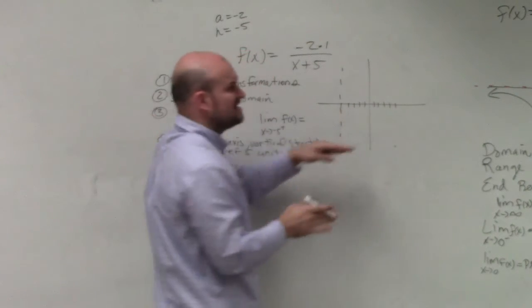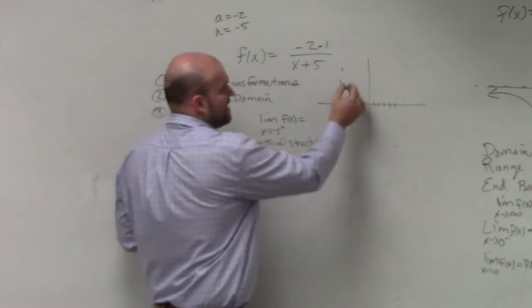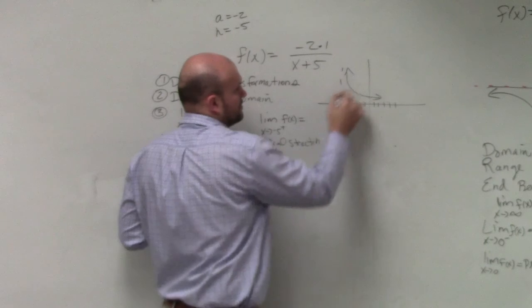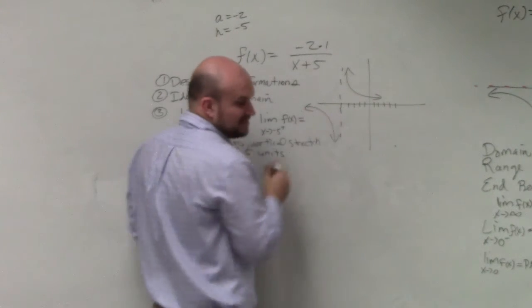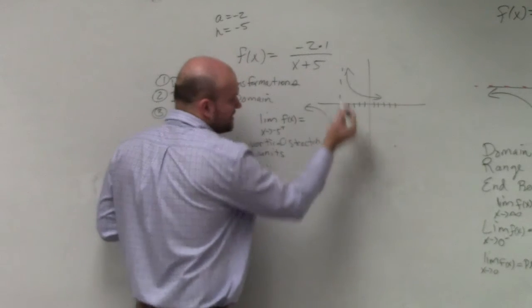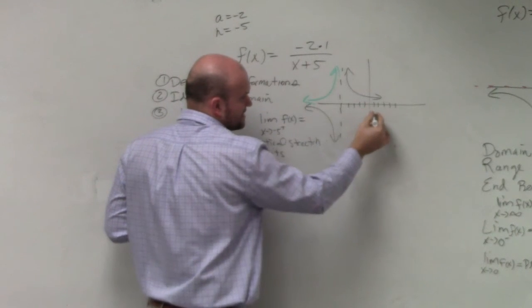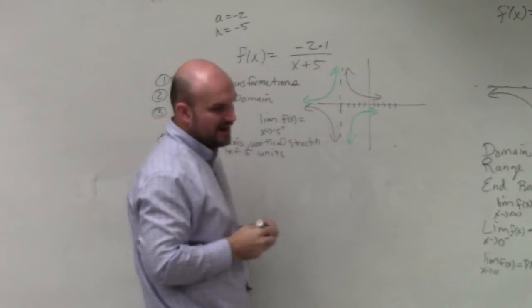Now, did the horizontal asymptote change? If you're just shifting to the left, does that really change? No. Now, the original graph looks something like this. But ladies and gentlemen, if I reflect that over the x-axis, it's going to look like the green graph.